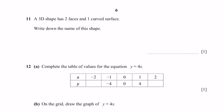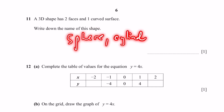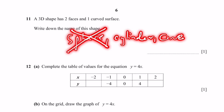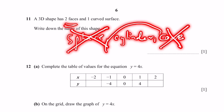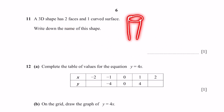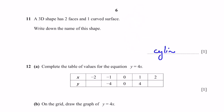Question 11. A 3D shape has two faces and one curved surface. Write down its name. Shapes with curved surfaces include a sphere, cylinder, and cone. A sphere has no flat faces. A cone has only one flat face. We need two flat faces, so the answer is a cylinder — it has two flat circular faces and one curved surface.